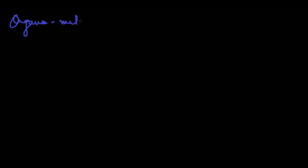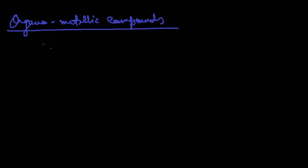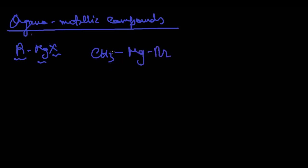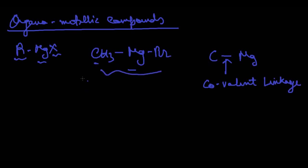Let's discuss organometallic compounds. The best examples are Grignard reagents, which are of the form RMgX, where R is any alkyl group, X is the halogen atom, and Mg is magnesium. An example is CH₃MgBr. The reason these are called organometallic compounds is because there is a covalent linkage between the carbon and magnesium atom.